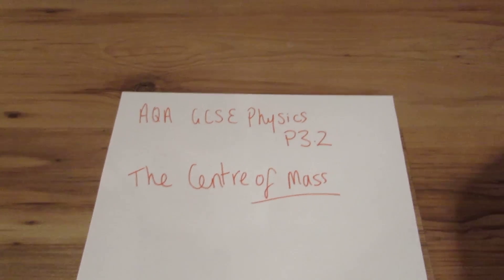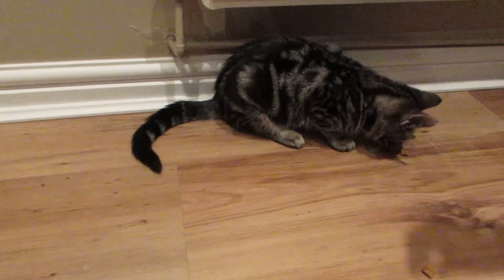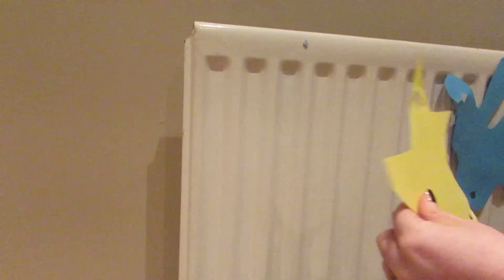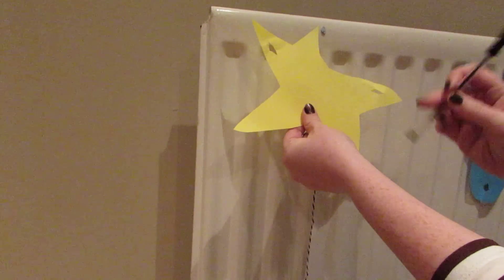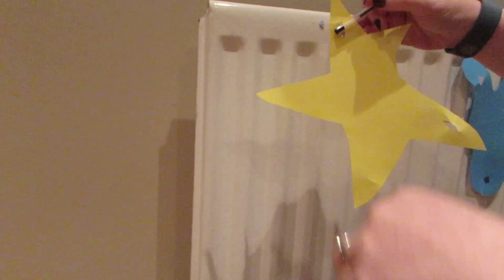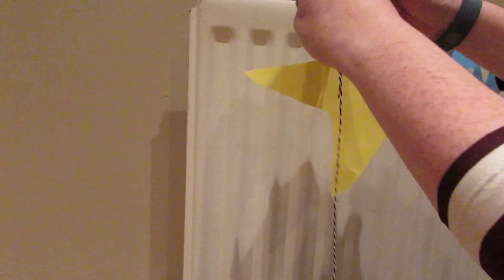So I have my assistant Primrose here. I have some shapes which we're going to work out the centre of mass of. I've got two holes in these shapes. I've got my pivots and I've got my plumb line, which has a weight on the bottom.